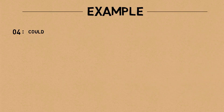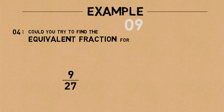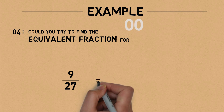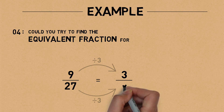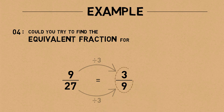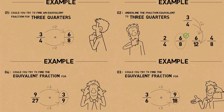For the last example, we could divide the denominator and the numerator since these are large numbers. Nine divided by three is three, and twenty-seven divided by three is nine. So three ninths is an equivalent fraction for nine twenty-sevenths. This is how we work with equivalent fractions.